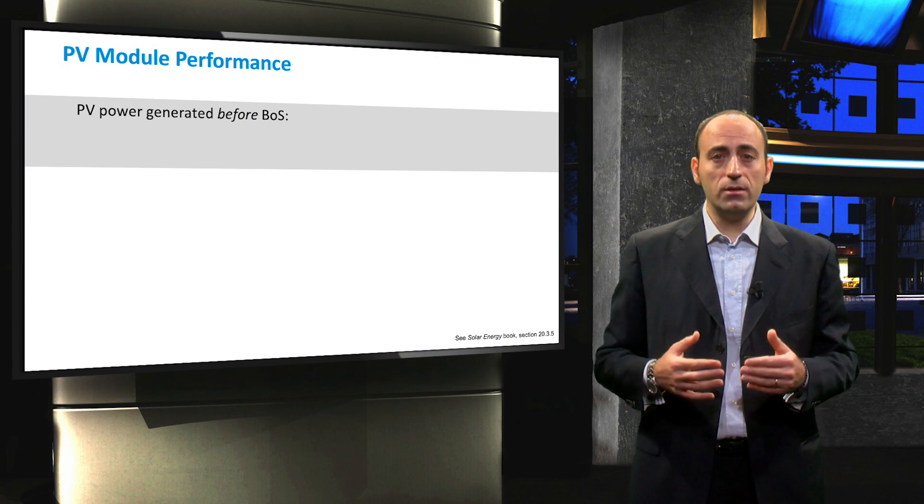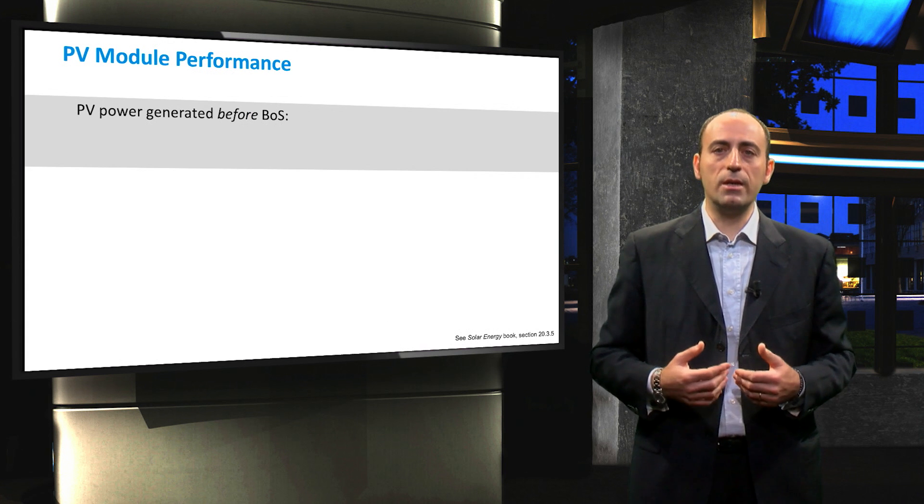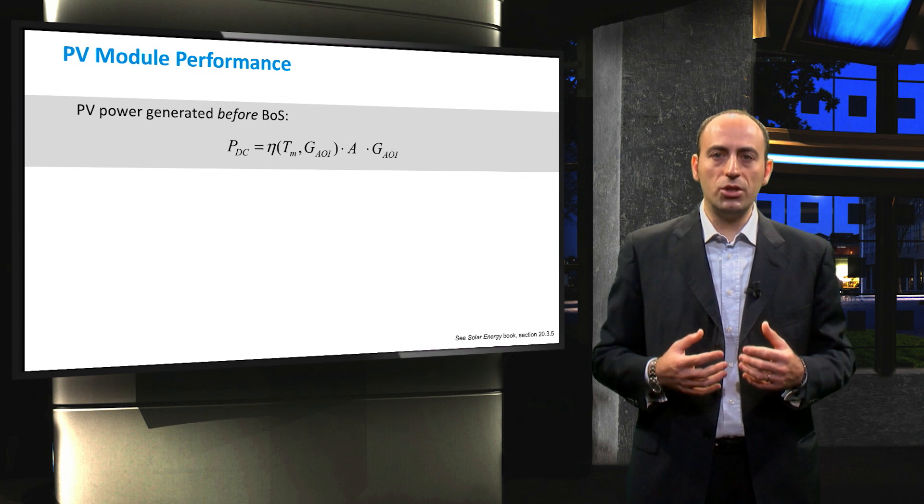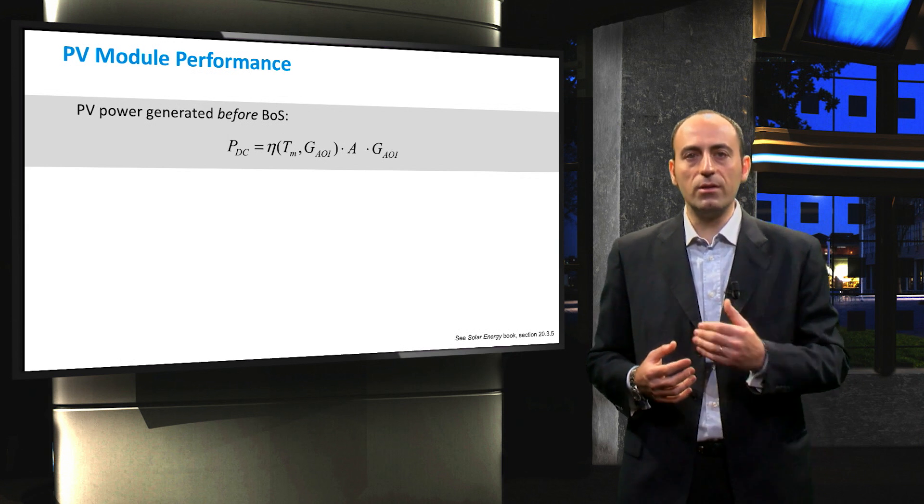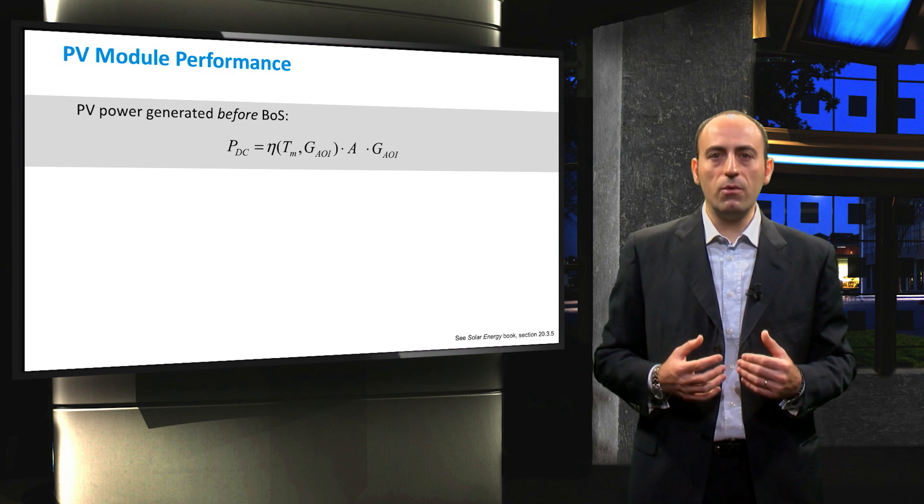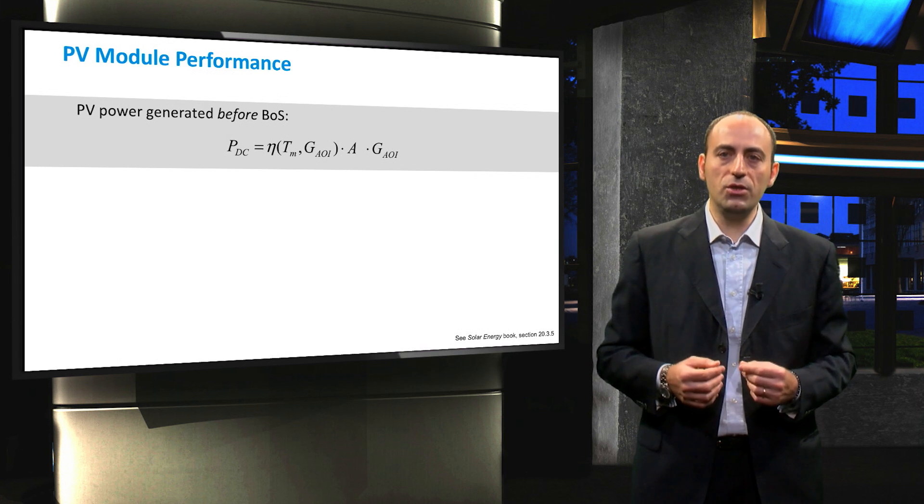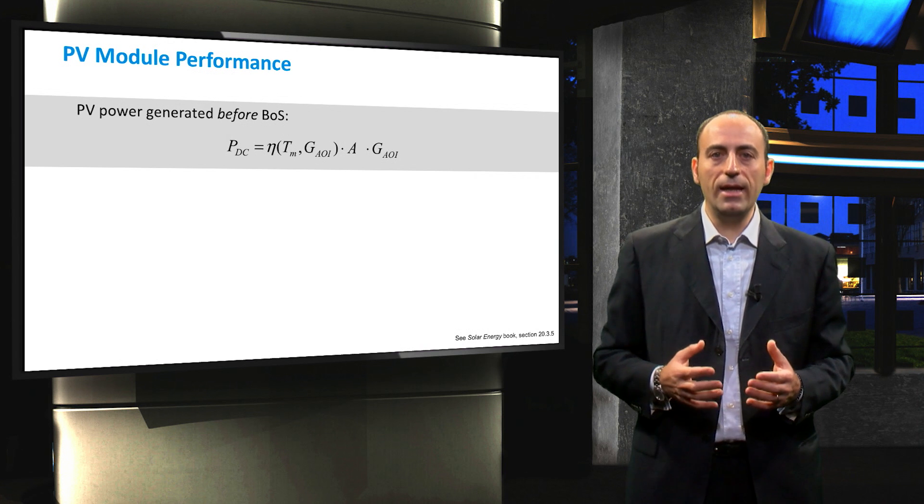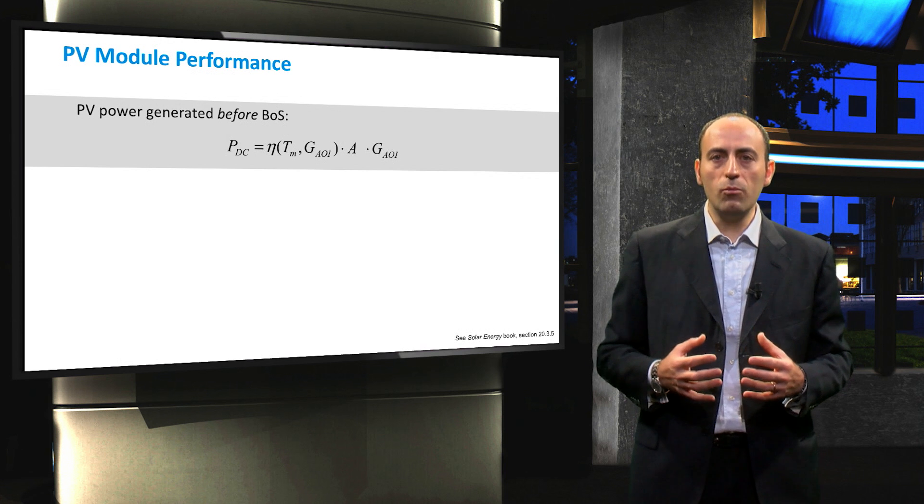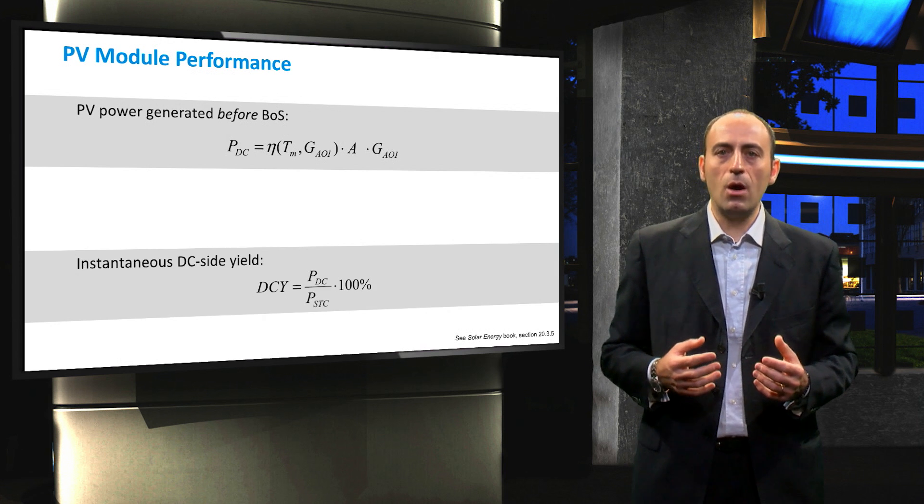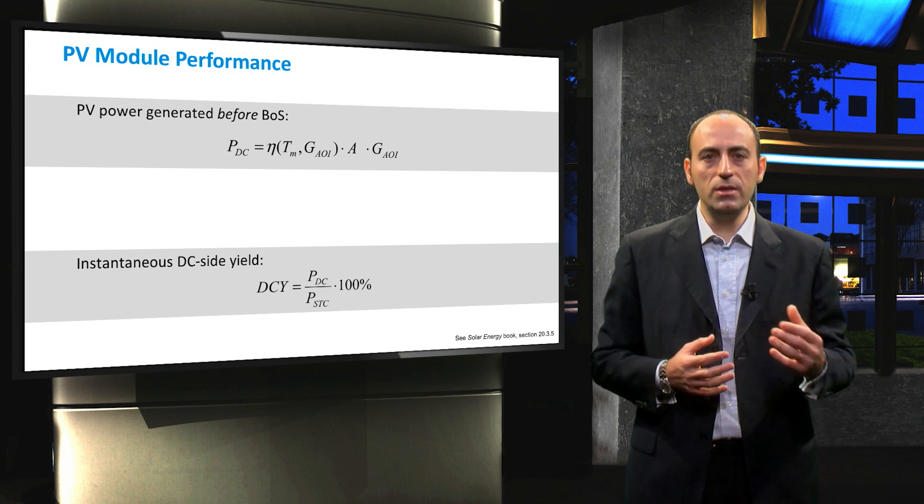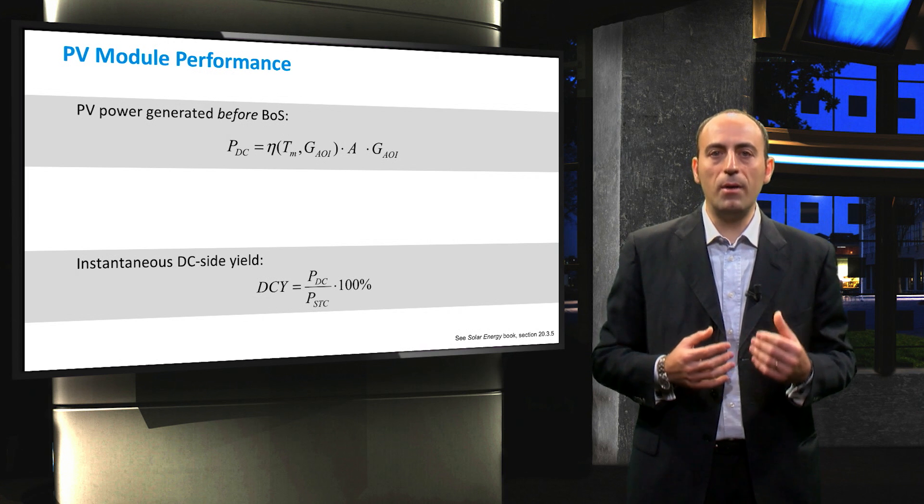As the goal here is to obtain the PV side performance in terms of DC side yield and to show you how to compute it, we need the DC side power generated by the PV panels before entering the balance of the system that basically is the charge controller or the inverter. The power generated is a function of the efficiency of the module, which we just calculated, and it is also a function of the panels area and incident irradiance. What will come out from this formula is just power in watts. So now we can define the instantaneous DC side yield as the ratio between the DC power generated divided by the power at STC, which is the one stated in the datasheet.